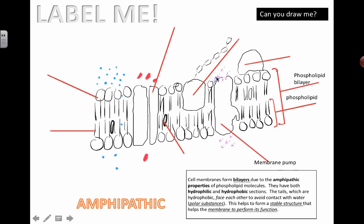Inside here you have a protein that goes all the way across. The proteins can come in many different forms and have many different functions — there's another video that lists all the different functions of these proteins. So this is a membrane pump. The idea that it's a pump means that it requires some ATP. You don't have to draw ATP, but if you label it as a membrane pump then everyone knows it's supposed to use energy to move things against their concentration gradient. You've got cholesterol in there which helps facilitate the fluidity of the membrane as well.